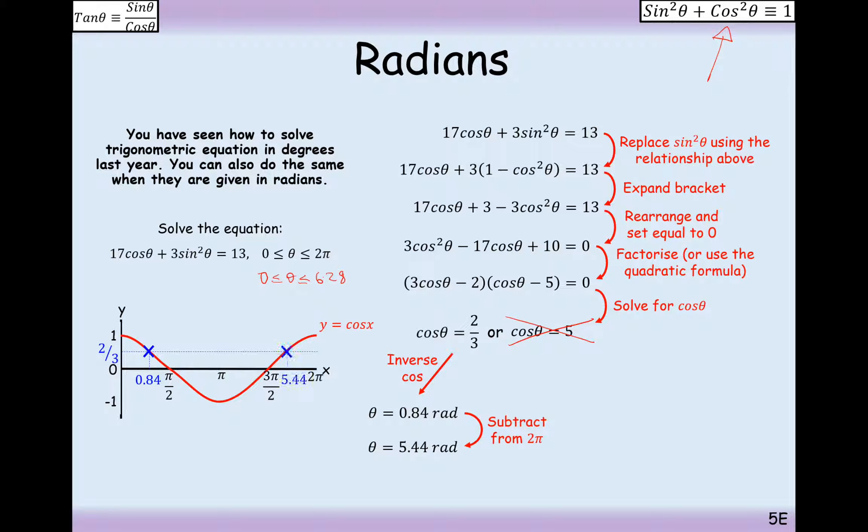Make sure you use the answer button in your calculator to get the most accurate answer you can. And we get θ here is 5.44. Those are our two answers on this side. And remember, on the other side, cos(θ) is never equal to 5, so no solutions here. Perfect.